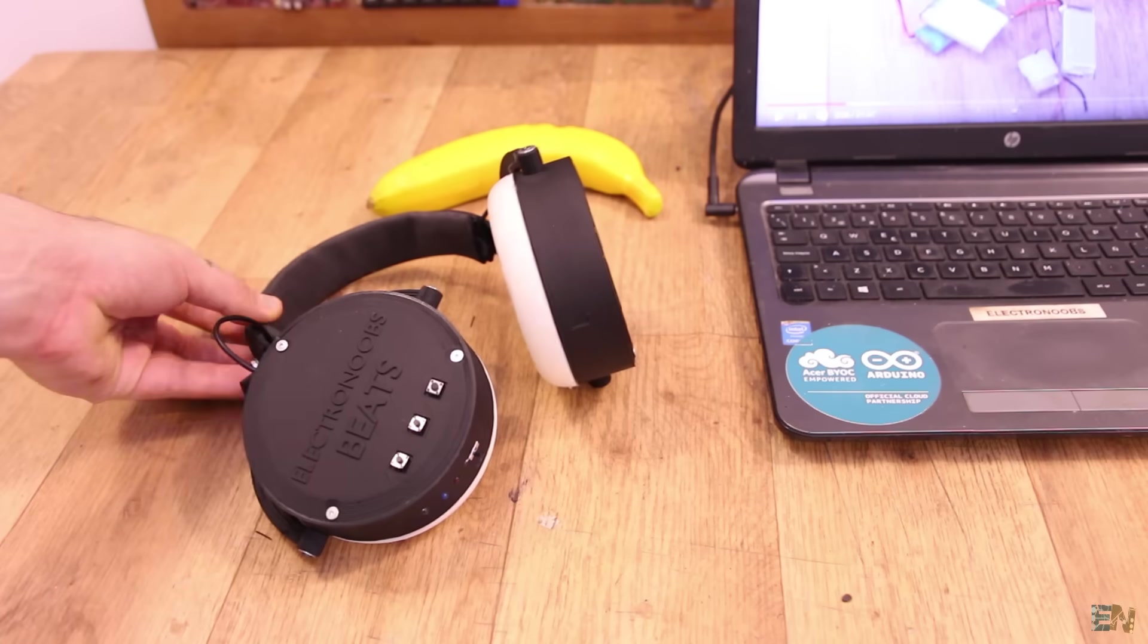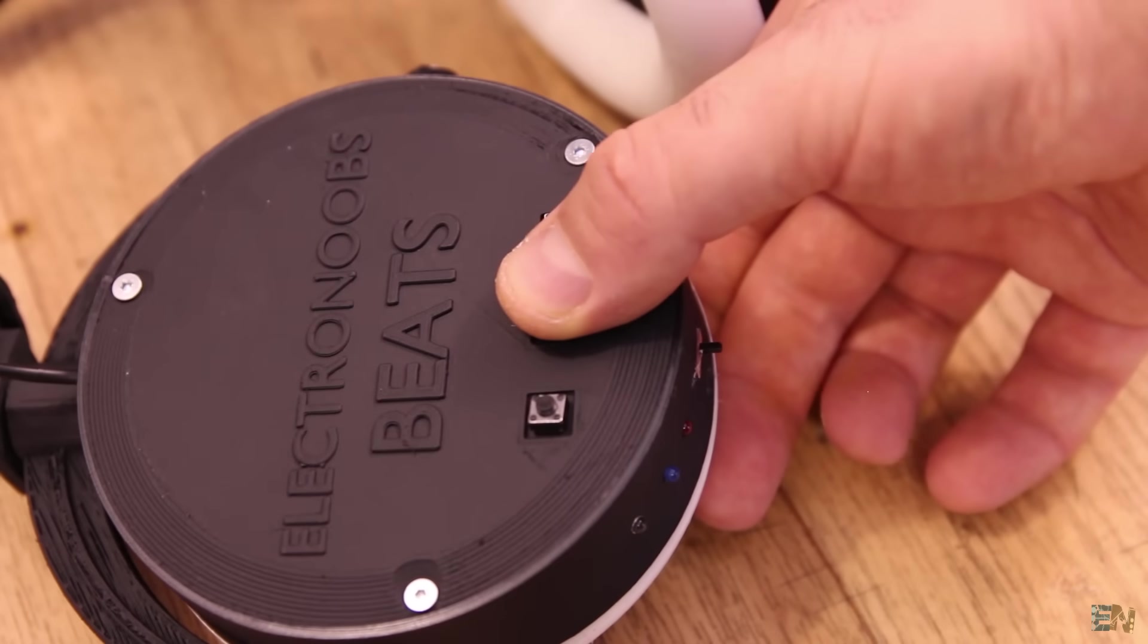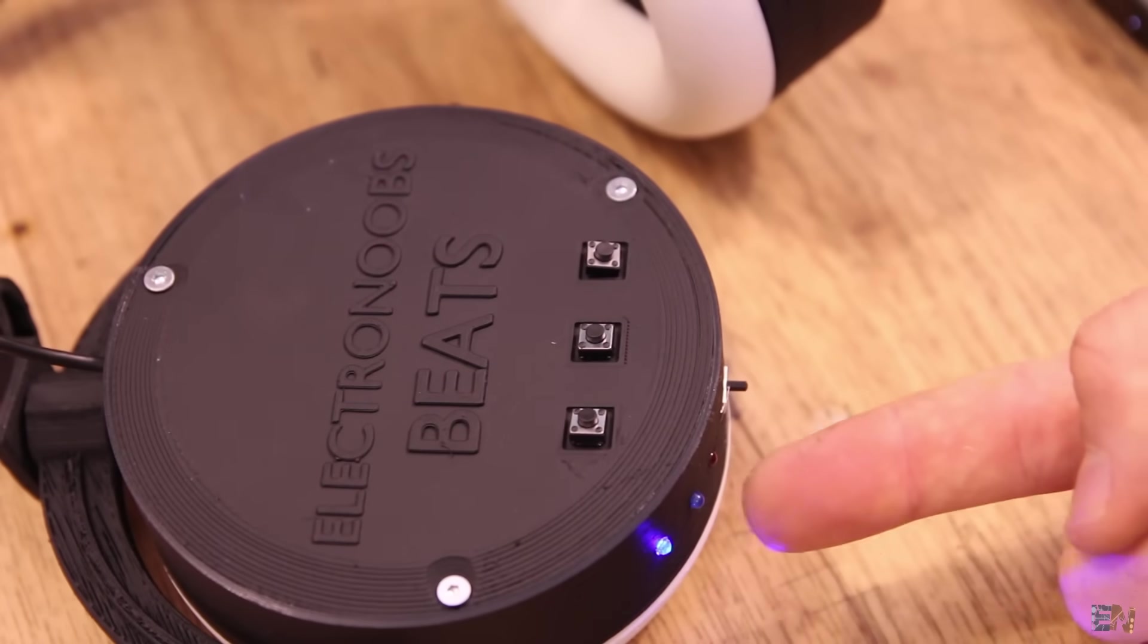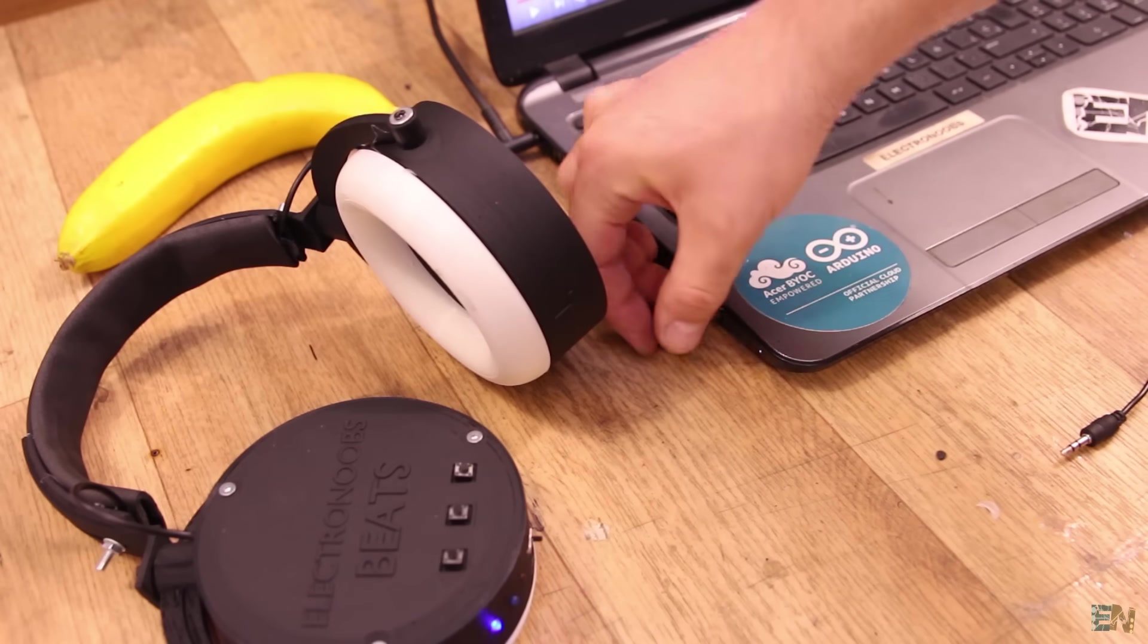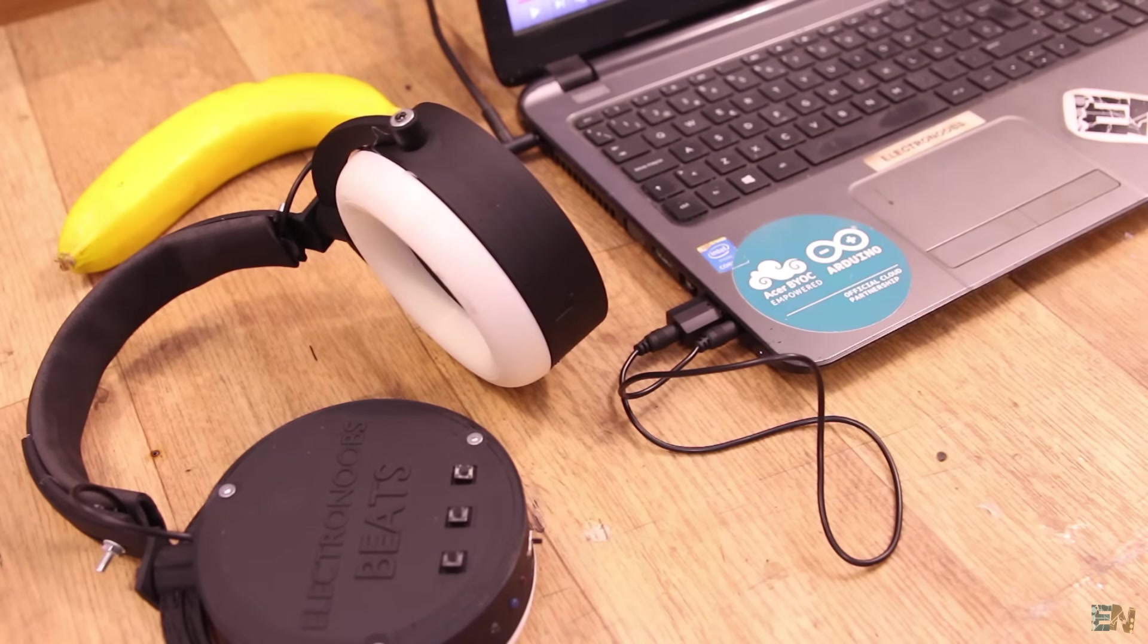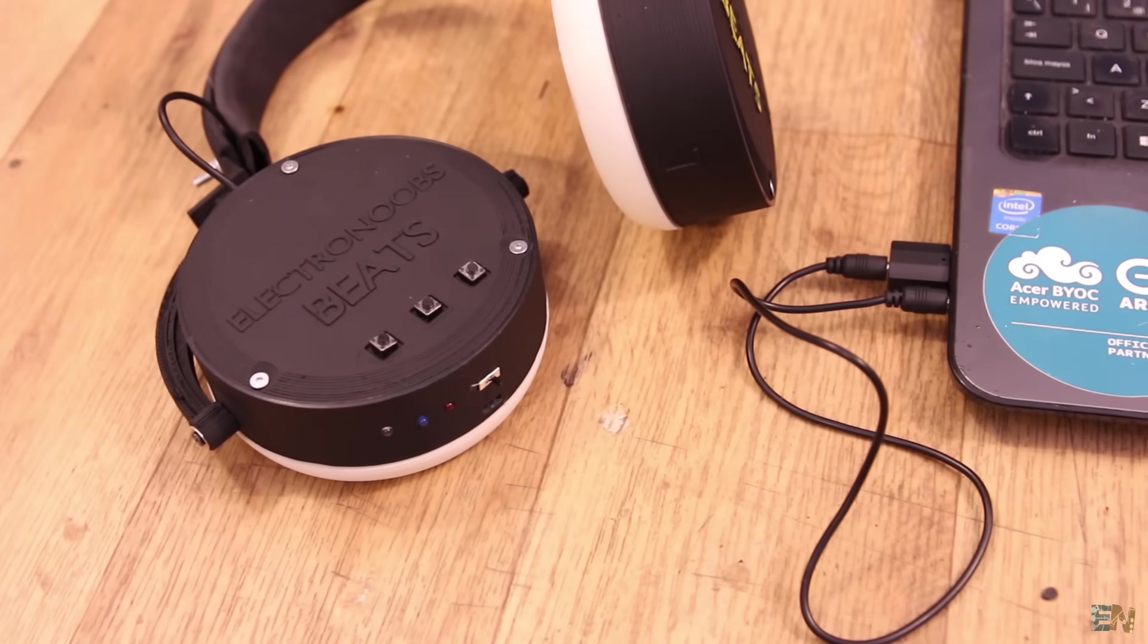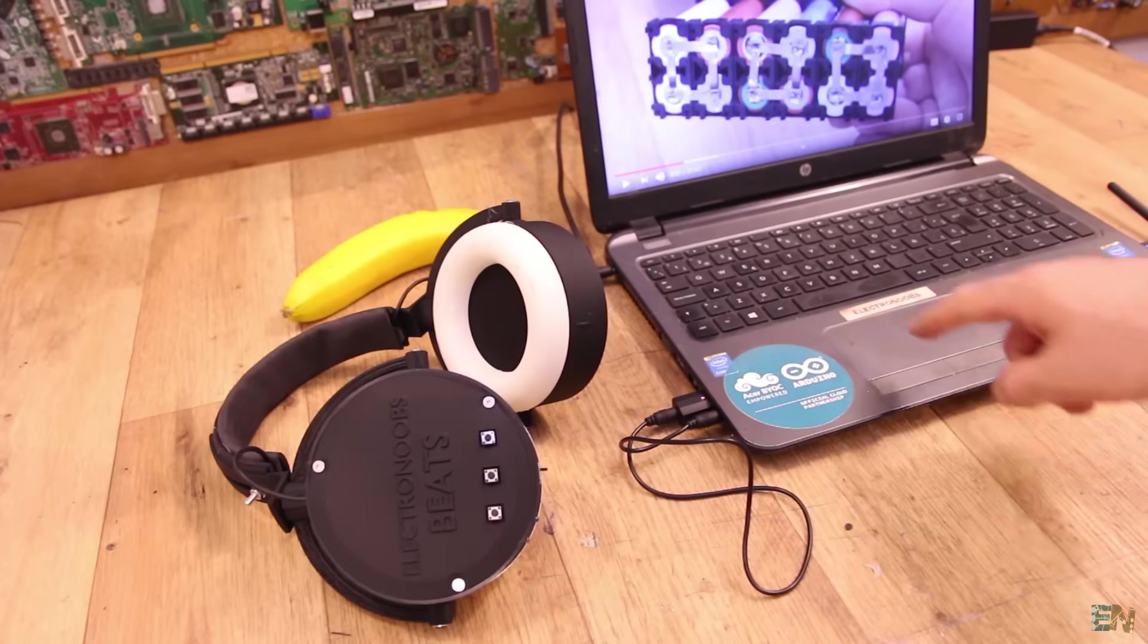Power on the headphones with the sliding switch. Then push for 2 seconds the Bluetooth button and that will put the receiver in connection mode. Now connect the Bluetooth transmitter to the PC USB connector for power and then the jack to the audio output. The connection will be made automatically. Now play the music and enjoy.